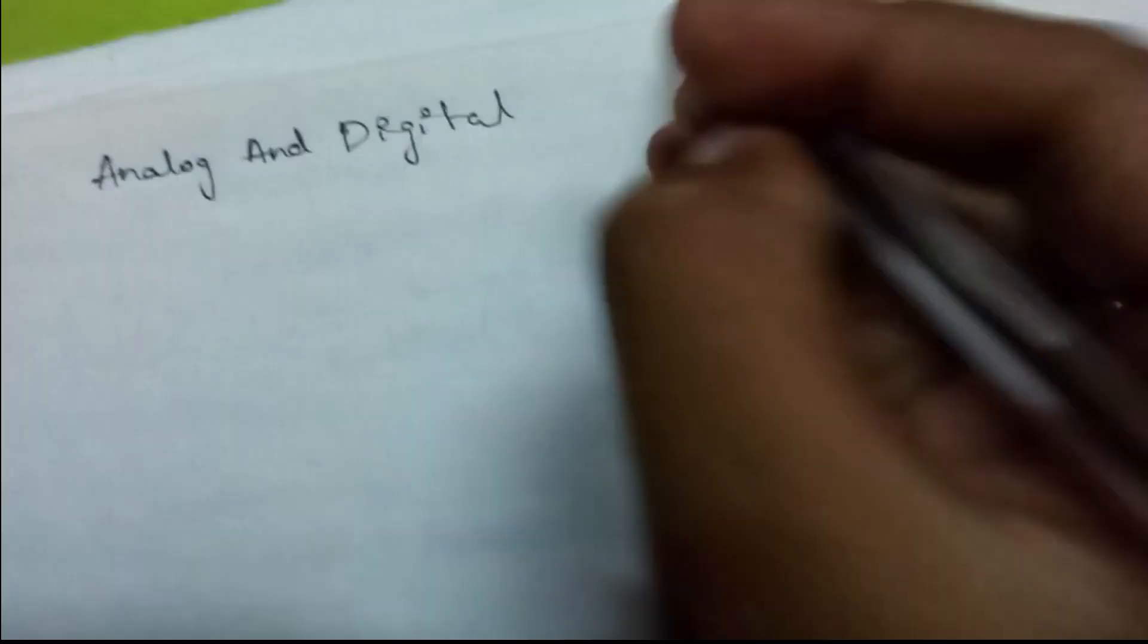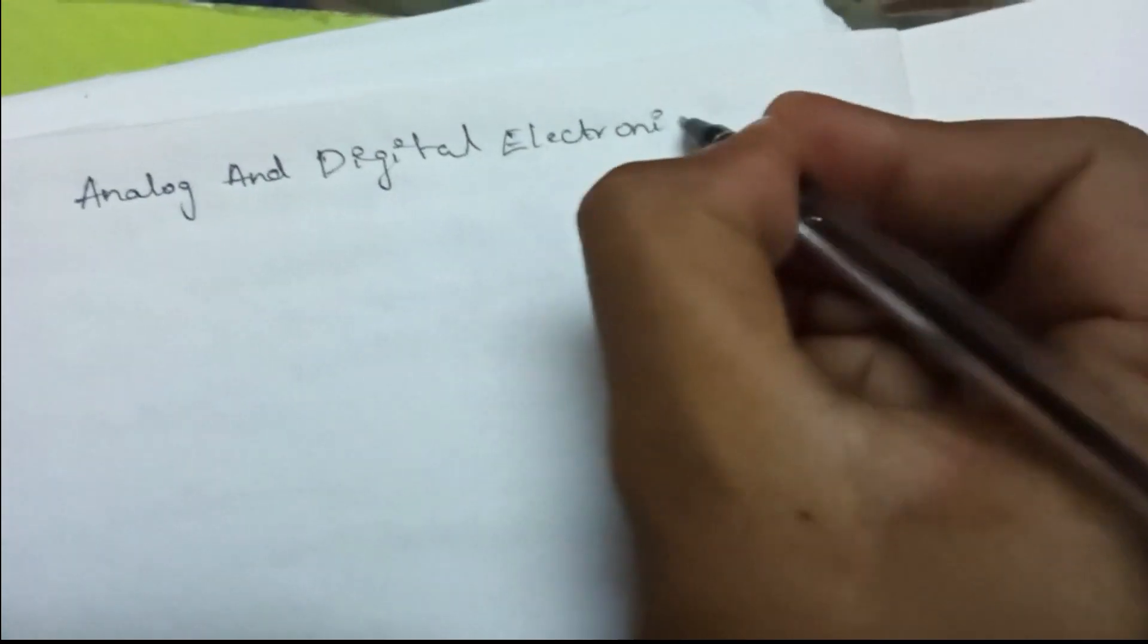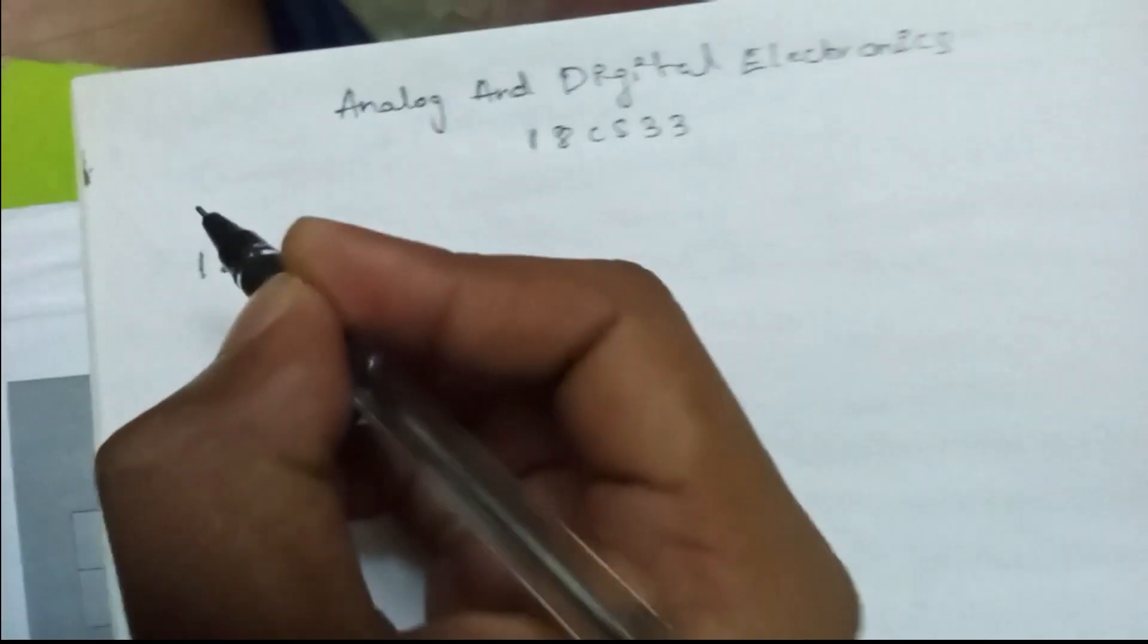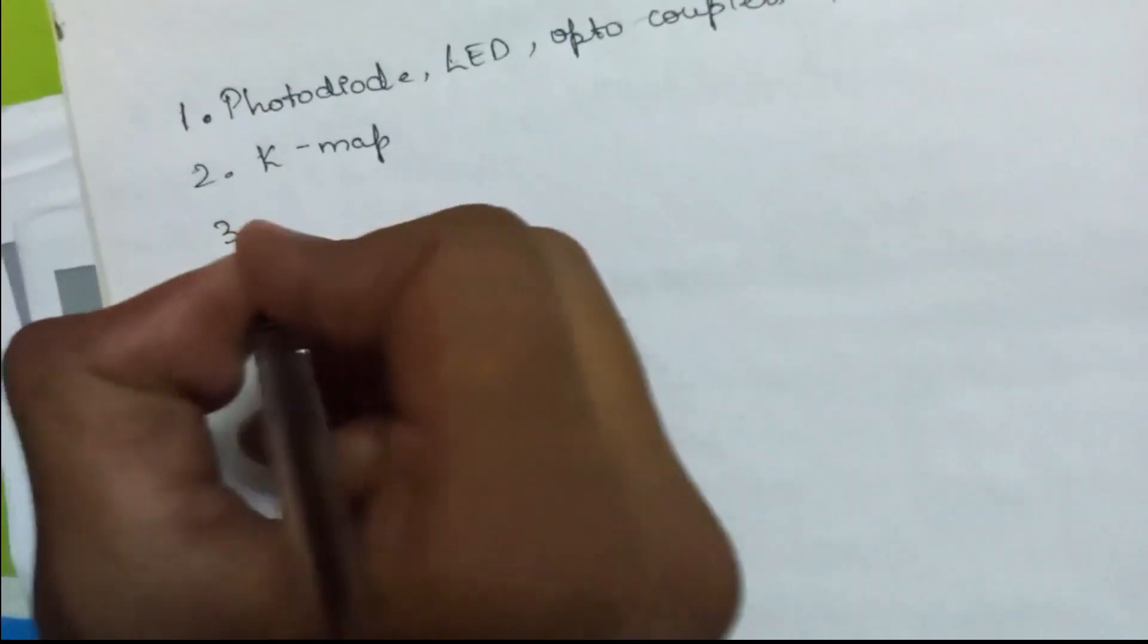How to score 60 plus marks in Analog and Digital Electronics 18CS33. We'll write down all the modules first. Module 1: photodiode, LED, optocouplers, and BJT biasing. Module 2: K-map. Module 3: combinational circuit design.